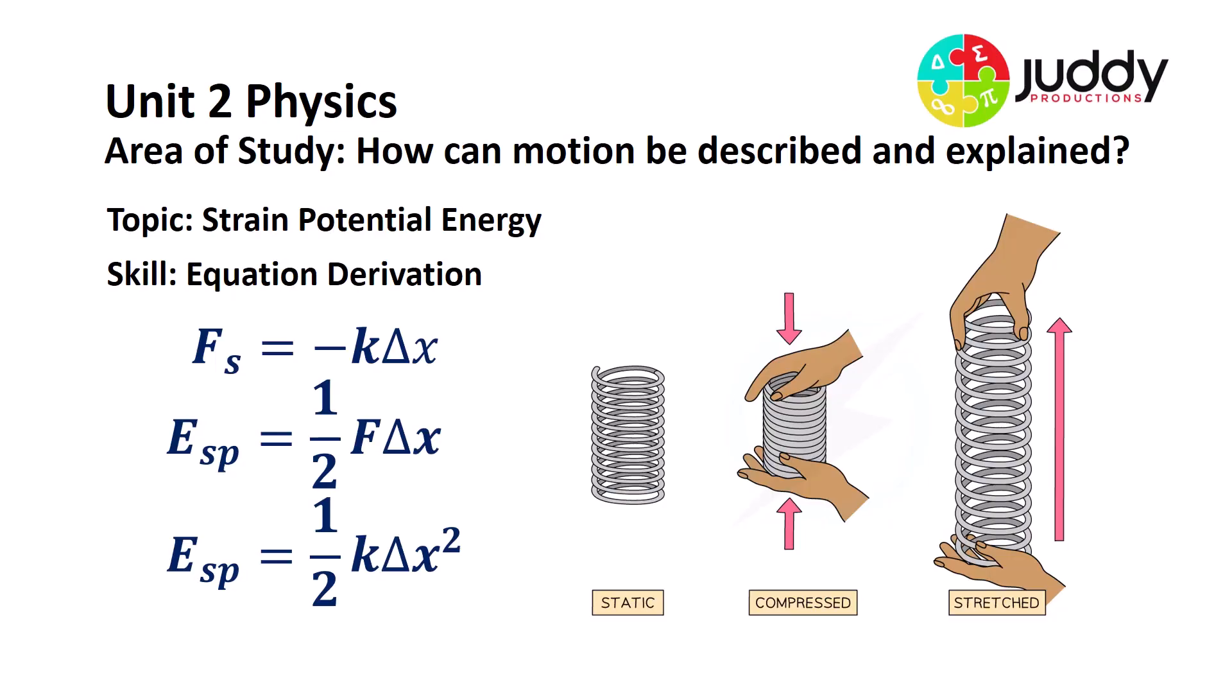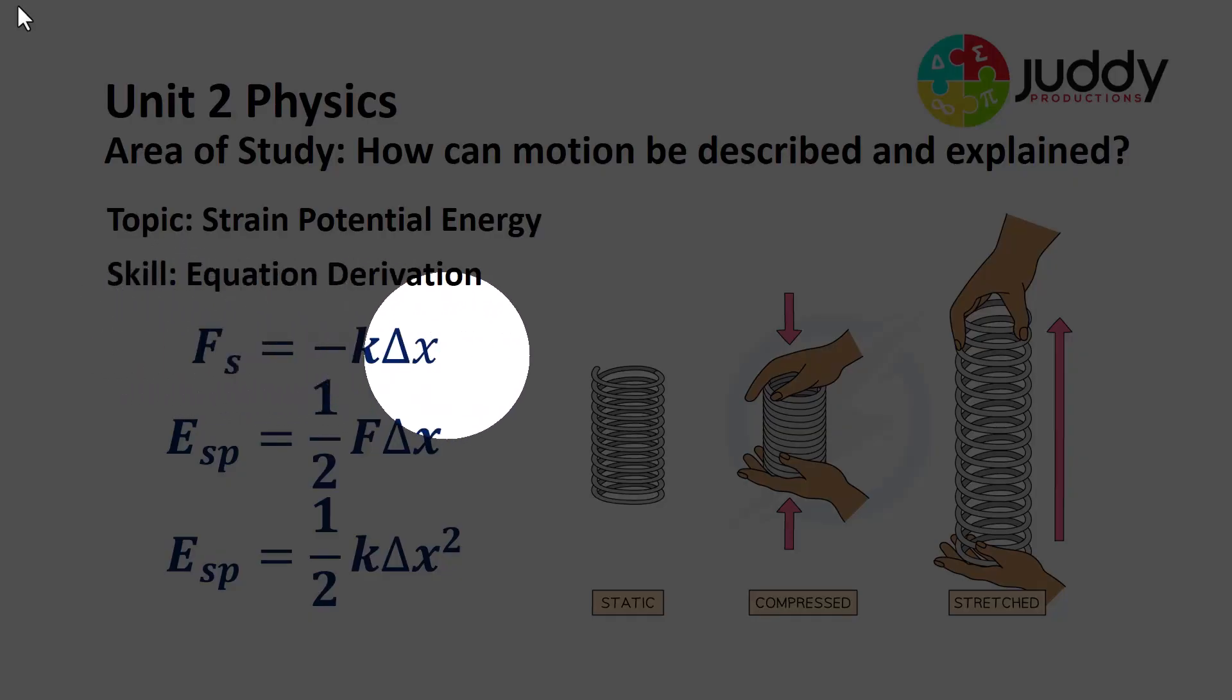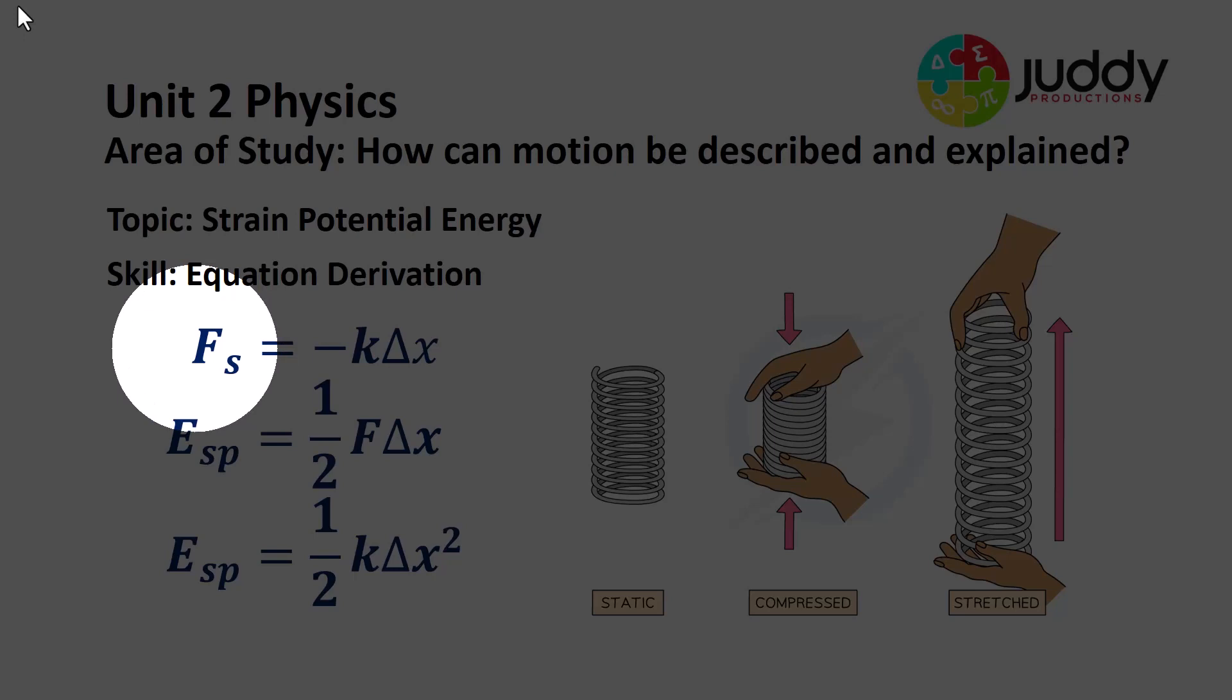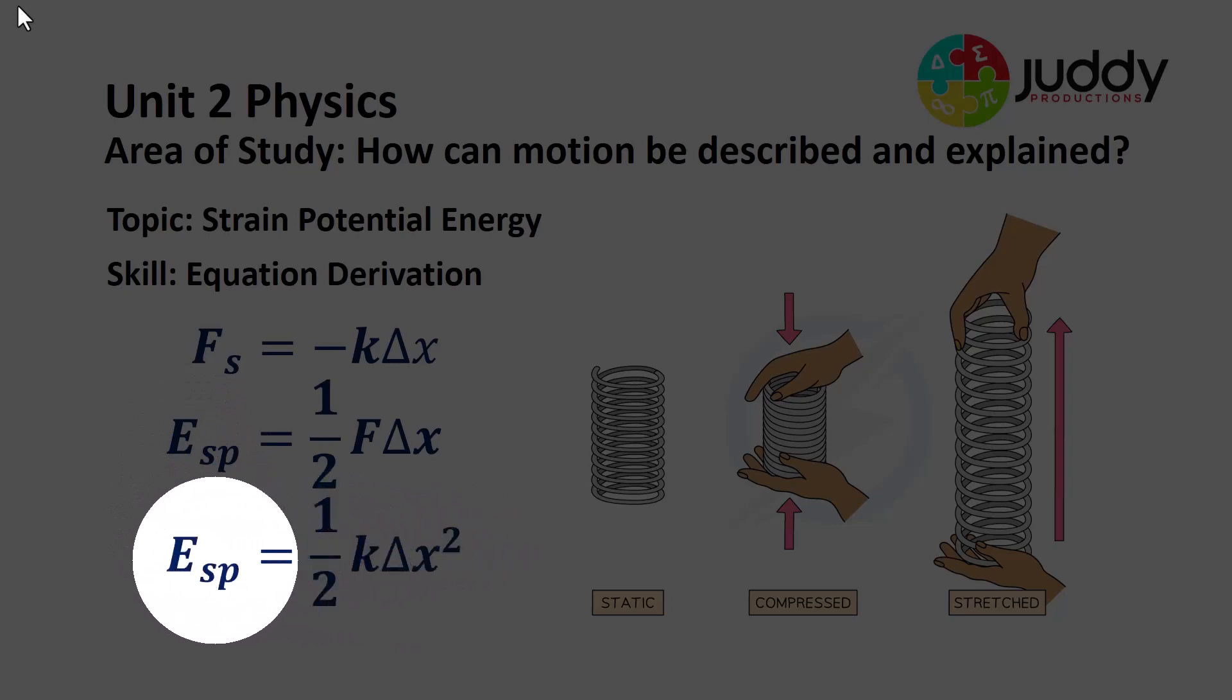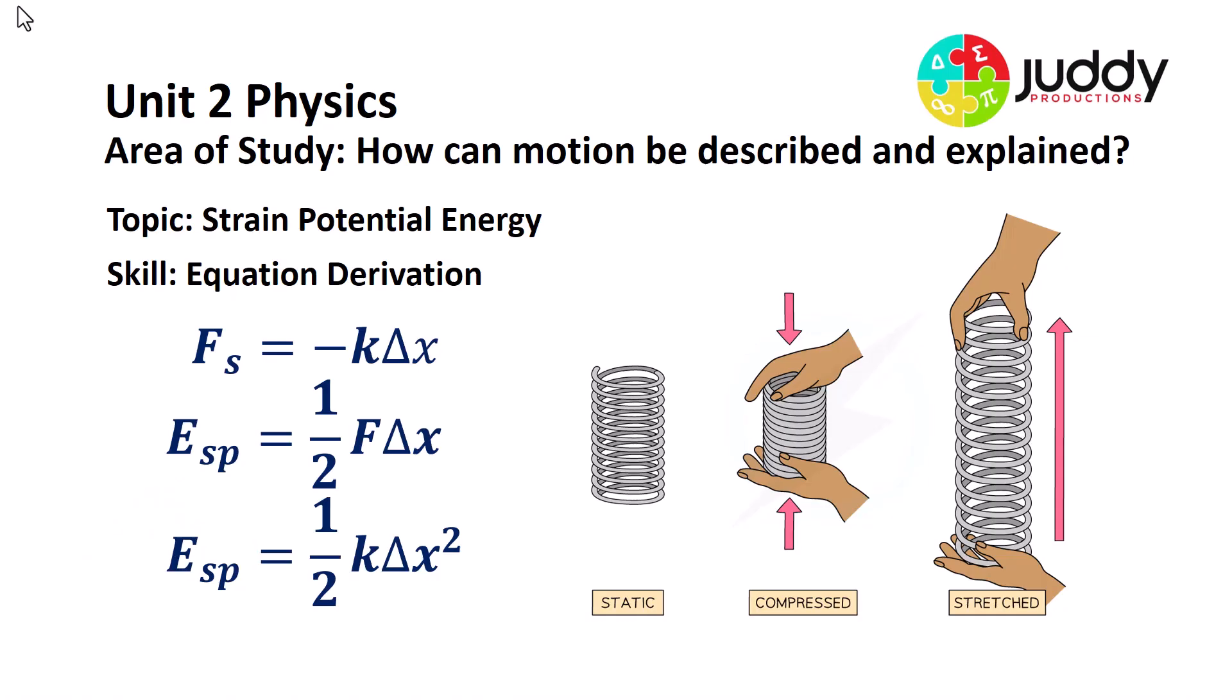Welcome physics students to this video looking at strain potential energy. In particular, we're focusing on the derivation of three equations as shown on the screen. Equation one for the force upon a spring, equation two for the strain potential energy of a spring, and equation three, a second variation for the strain potential energy stored in a spring.